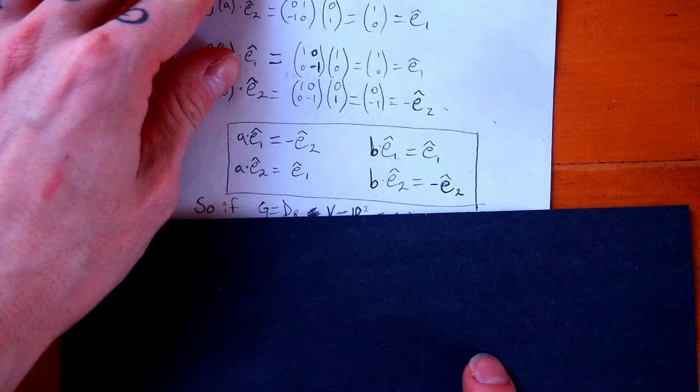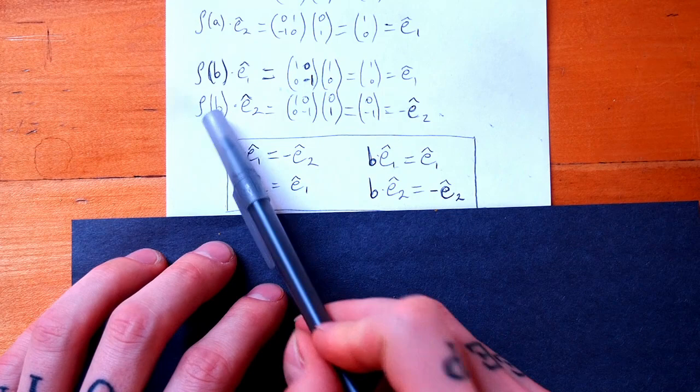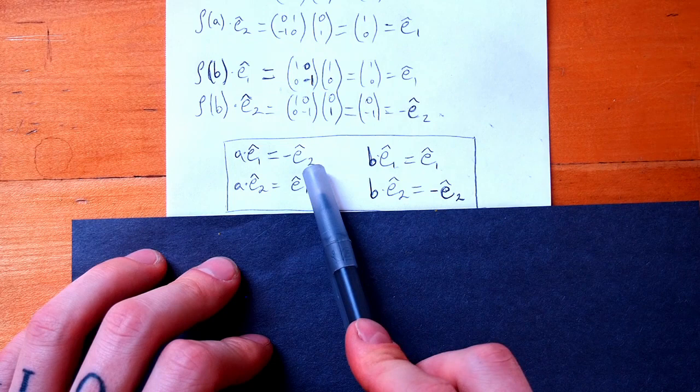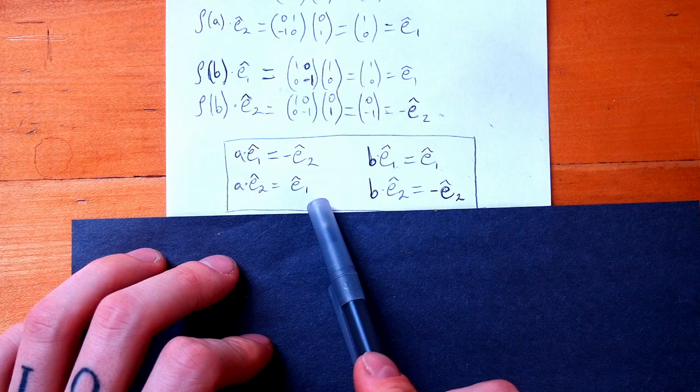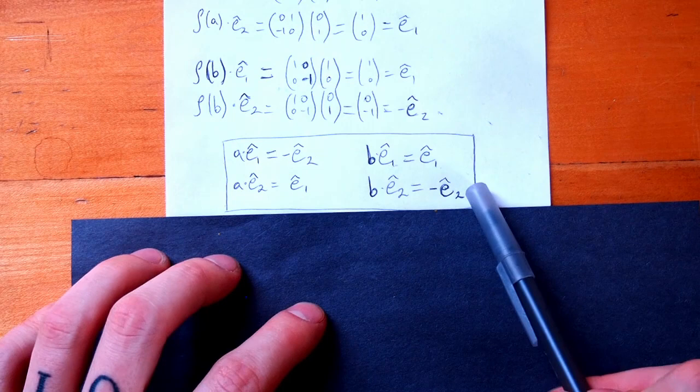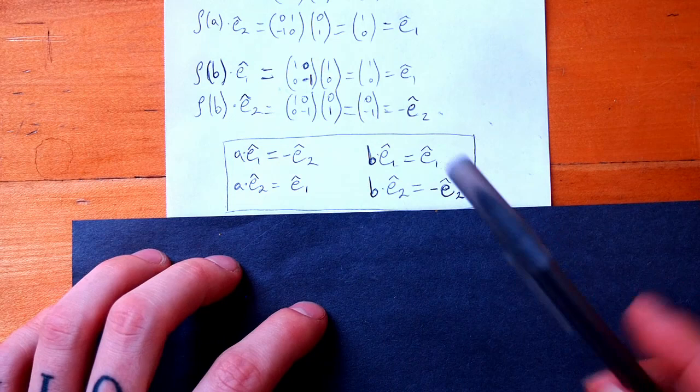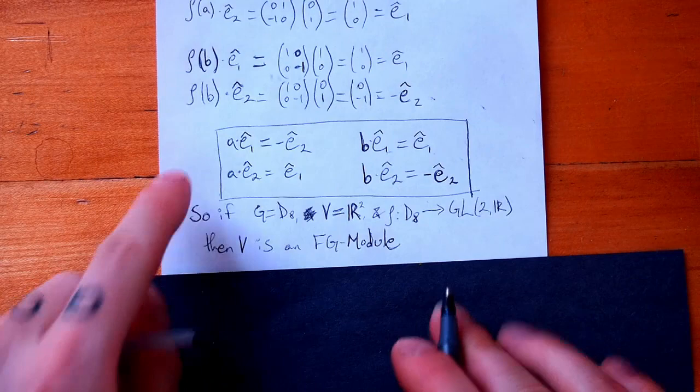I summarize the results in a table. A acts on e₁ to give −e₂; B acts on e₁ and leaves it unchanged; A acts on e₂ and gives e₁; B acts on e₂ and it picks up a minus sign. This tells us all the information we need for V to be an FG module — in this case an RD8 module. So with G = D8, V = R², and ρ mapping D8 to GL(2, R), V is an FG module, namely an RD8 module.